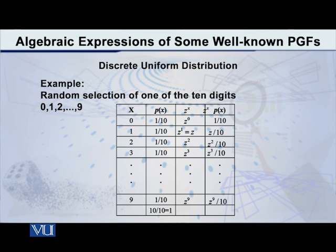So, when I do that, you can easily see that I will obtain P of X into Z raised to X as 1 by 10, Z by 10, Z square by 10, Z cube by 10 and so on.